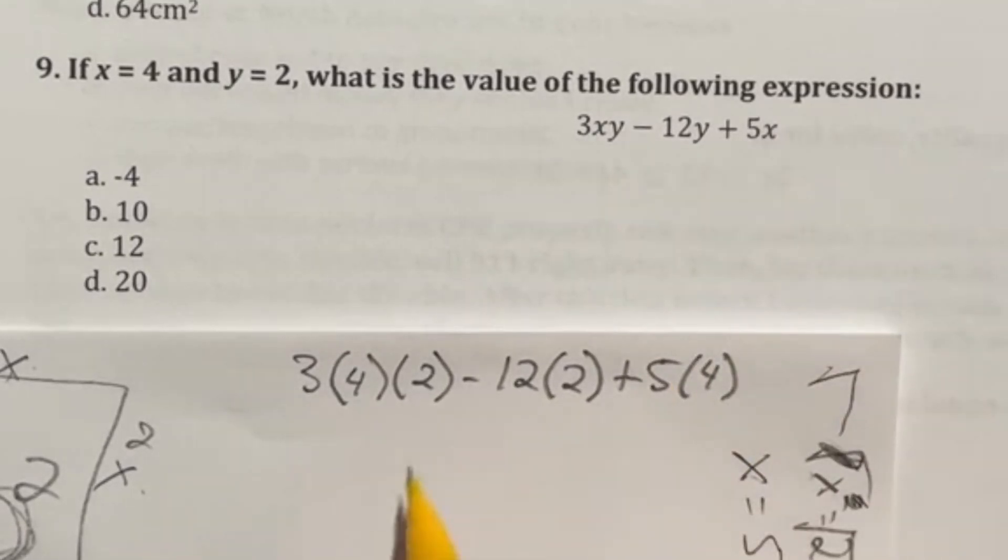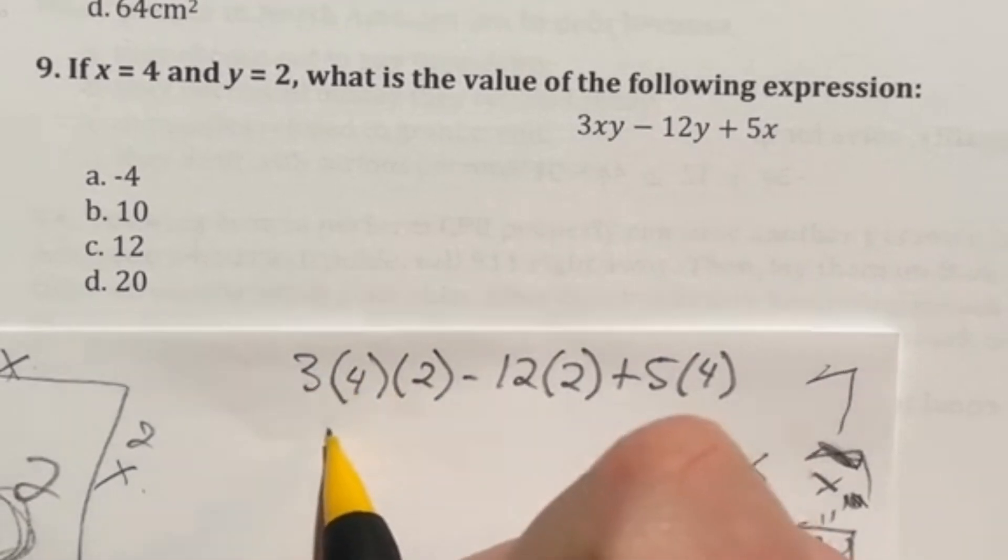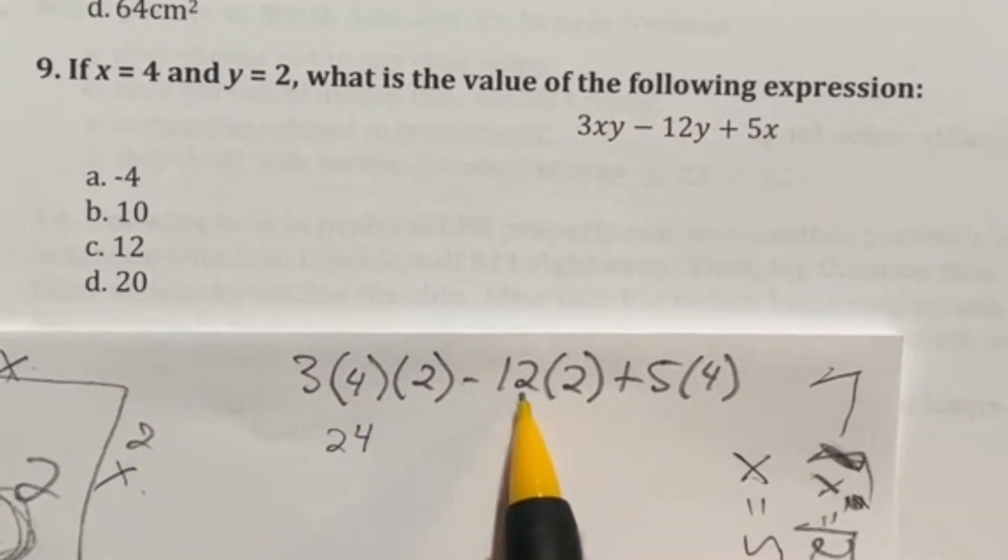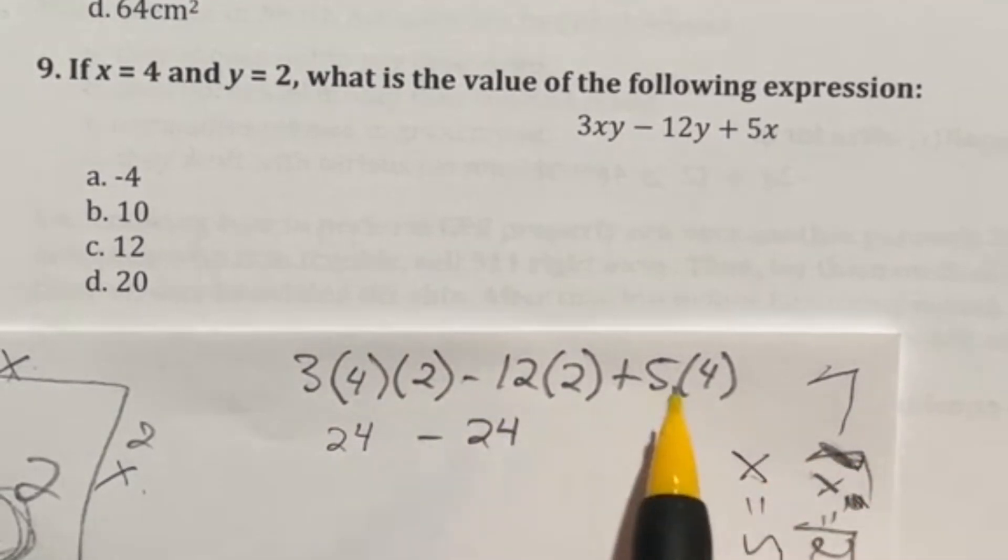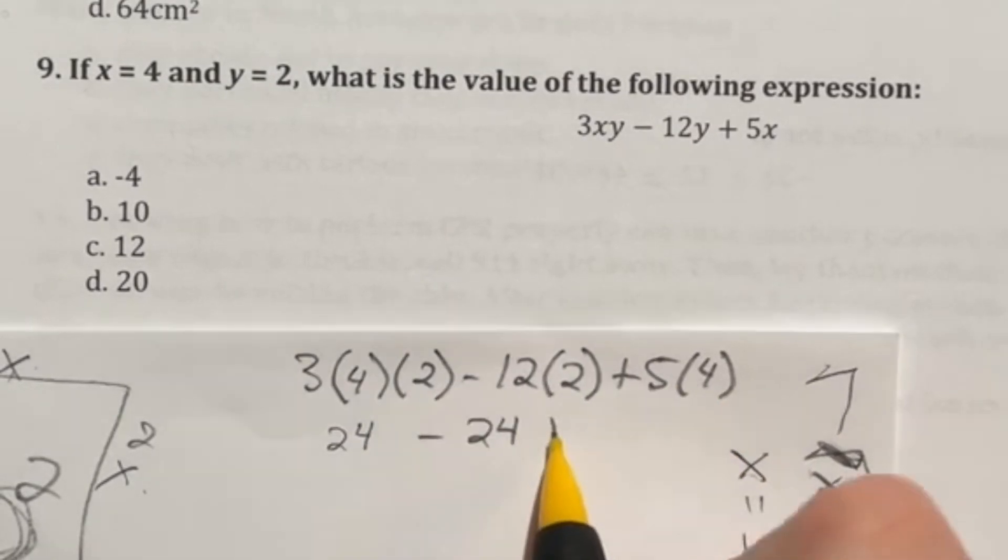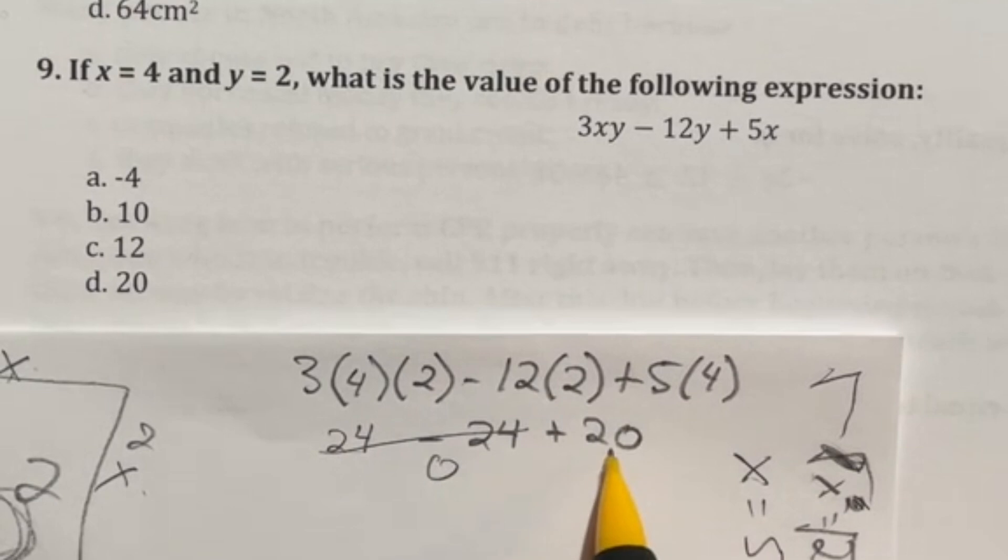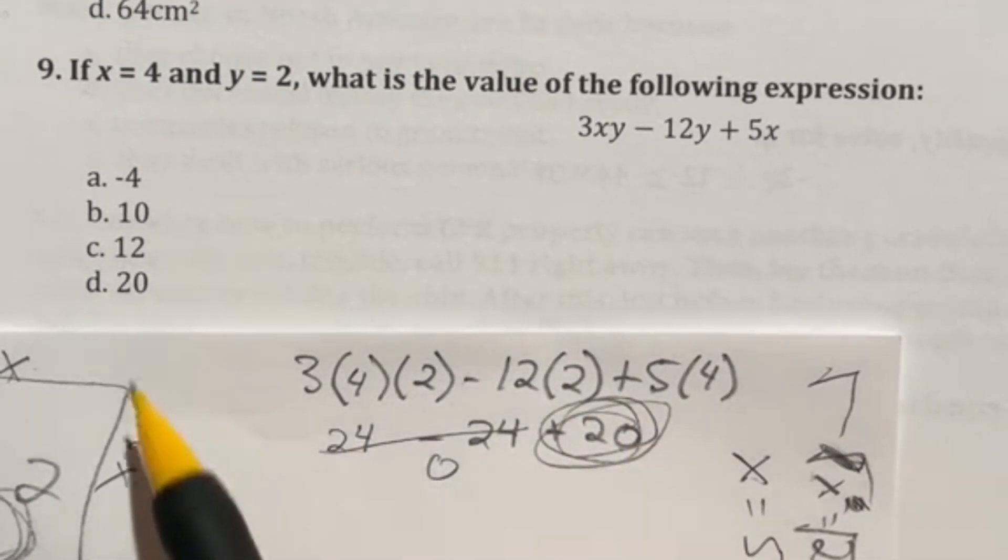Now there is no calculator on the ASVAB. So let's go ahead and knock these out in our head. We got four times two, which is going to give us eight times another three is going to give us 24. Then we got 12 times two, which is minus 24. And then we have five times four, which is 20. So when we're looking at this, we got 24 minus 24. So those cancel out to zero. And then we have the 20 left over here. So that means it looks like our answer is just going to be D.